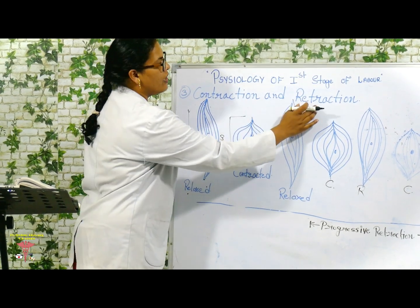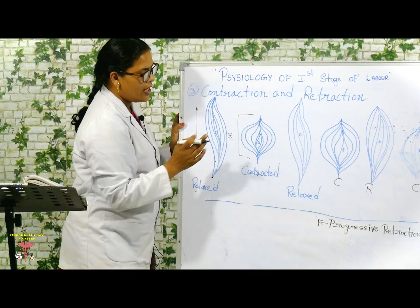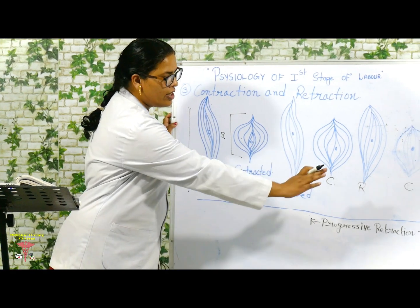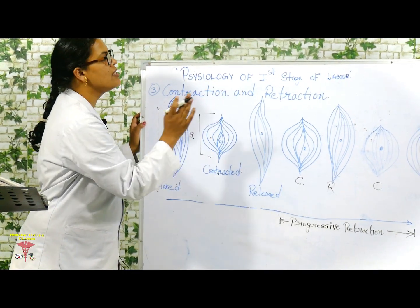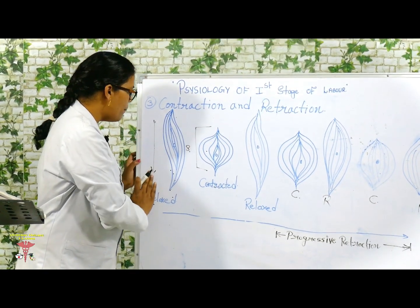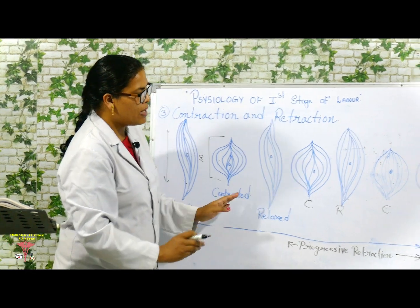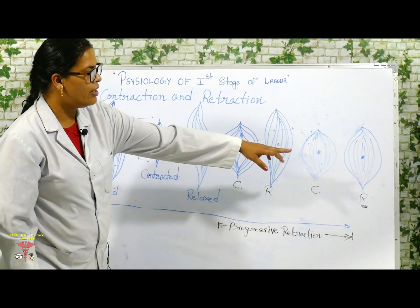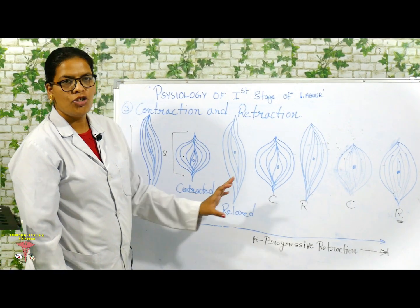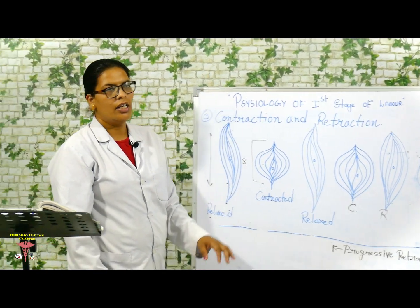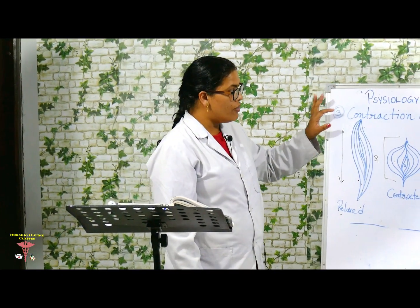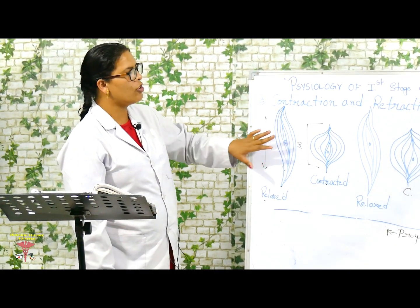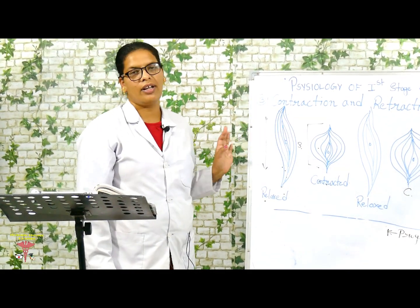So this is the third physiology of the first stage of labor — contractions and retractions. When the muscles relax, in normal relaxation they return to a longer length, but with progressive retractions the uterine muscles remain shortened. This concludes the explanation of contraction and retractions as the third physiological change of the first stage of labor.